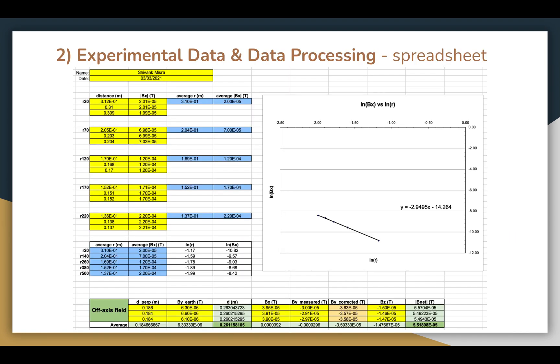So here's a look at my experimental data, where I have my raw data as well as my graph of ln(Bx) versus ln(r). At the bottom, I have my net magnetic field at a location 45 degrees off-axis from the dipole. Let's now use this data to perform some calculations.